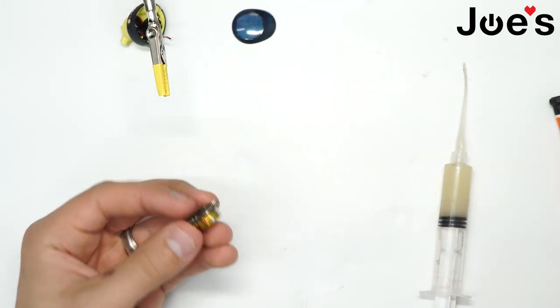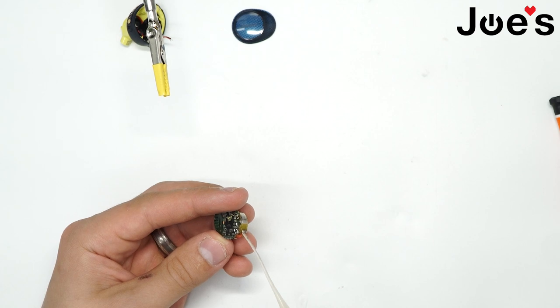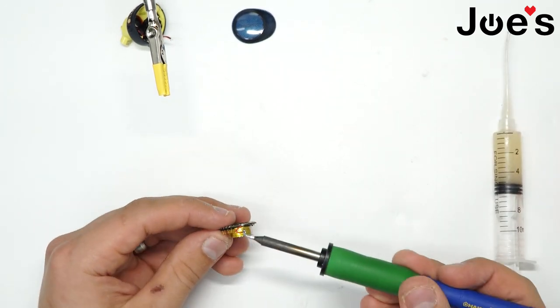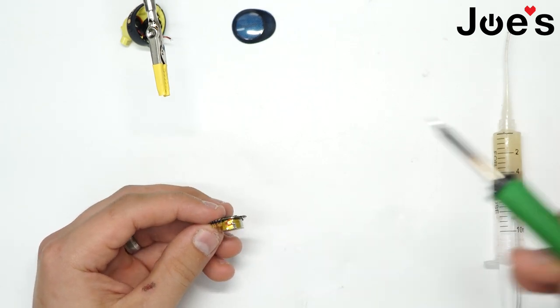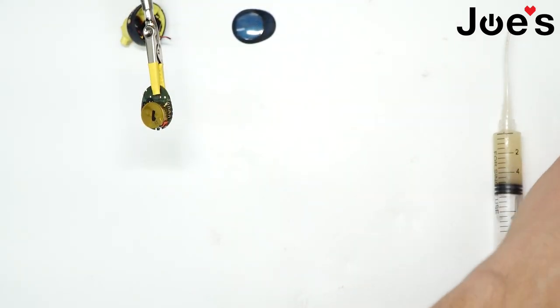Next what we want to do, we want to unsolder the actual points from the battery. Because we're replacing the main board. Alligator clips really do help.